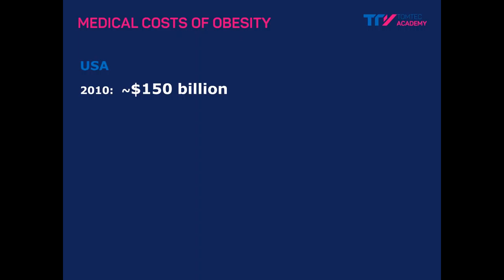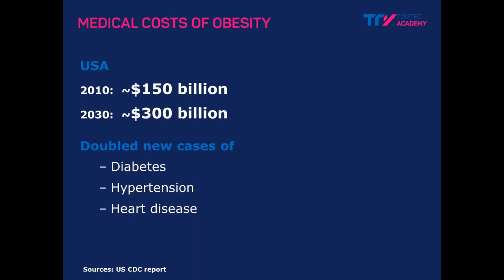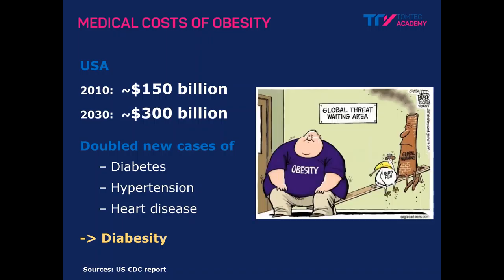This brings a huge cost for the healthcare system. Obesity cost around 150 billion U.S. dollars in 2010, and this will increase to 300 billion by 2030. With that, we will see double new cases of diabetes, hypertension, and heart disease. From these two problems — obesity and diabetes — there is a new term, 'diabesity,' which describes this unhealthy relationship. Obesity could become a much bigger global threat than issues like global warming for our social and healthcare systems.